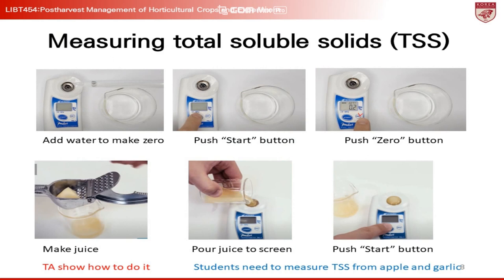Refractometry is a method used to measure total soluble solids (TSS) in fruit juices and other solutions. The procedure for using a refractometer is straightforward. First, turn on the instrument to ensure it is ready for use. Then, calibrate it using water as your blank sample — this sets a baseline for your measurements. Simply add a few drops of water to the refractometer, close the cover plate to spread the water evenly over the prism, and press the Start or Read button. The device should display a value, which you will set to zero.